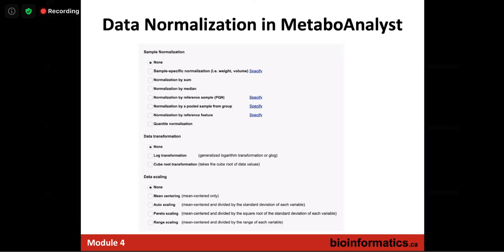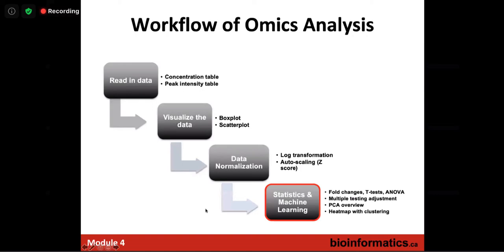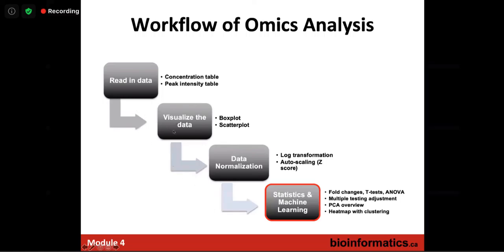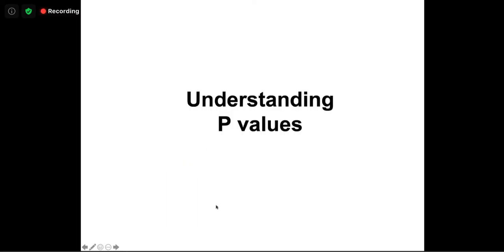So to summarize the overall workflow thinking: you read in the data, visualize the data, decide whether you need normalization or not. Then you get your data normalized — assumed done at this point. When you normalize your data, you then do statistics and machine learning tests. That's the overall workflow.